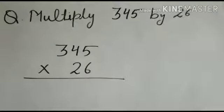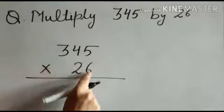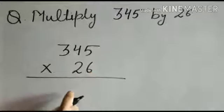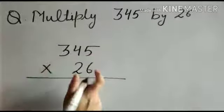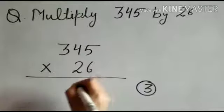Our first step is to multiply 345 by 6. Let's start. 6 times 5 is 30. We write here 0 and 3 as a carry.